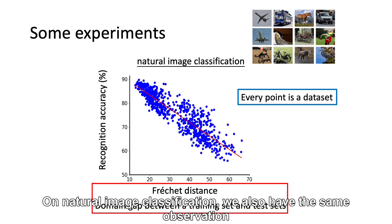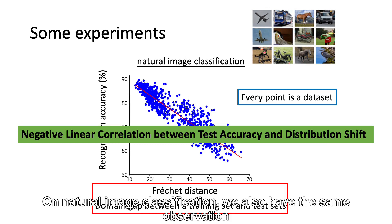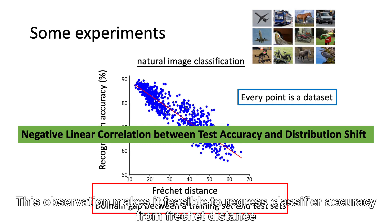On natural image classification, we also have the same observation. This observation makes it feasible to regress classifier accuracy from Fréchet distance.